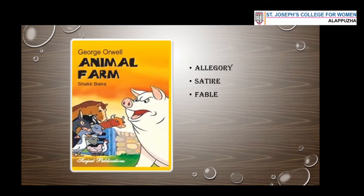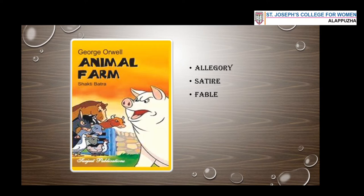Animal Farm is an allegory, a satire, and a fable. This was given as an assignment to you. I'll be explaining the three different terms to you. First, allegory: allegory is any narrative in verse or prose in which the agents, actions, or the setting has two levels or layers of meaning — the surface level meaning and the under-the-surface level meaning. There are basically two types: historical or political allegory, and allegory of ideas.